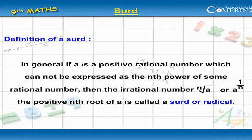In general, if a is a positive rational number which cannot be expressed as the nth power of some rational number, then the irrational number nth root a or a to the power of 1 by n, the positive nth root of a, is called a surd or radical.